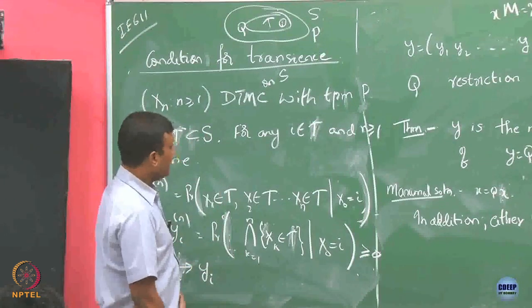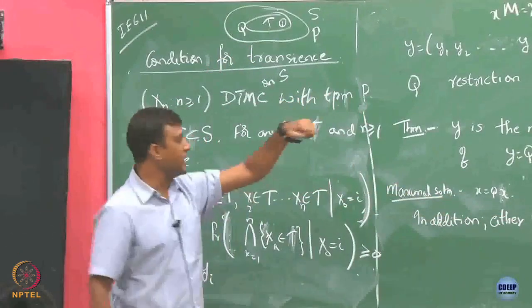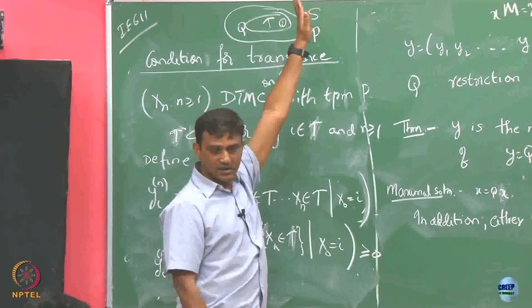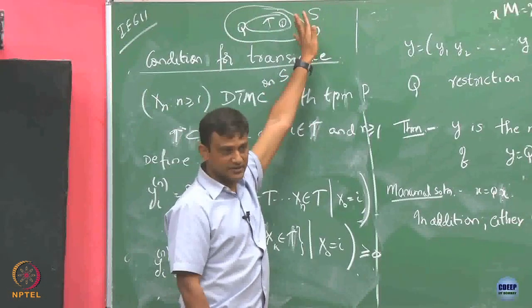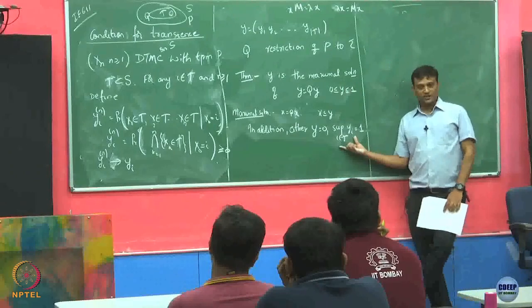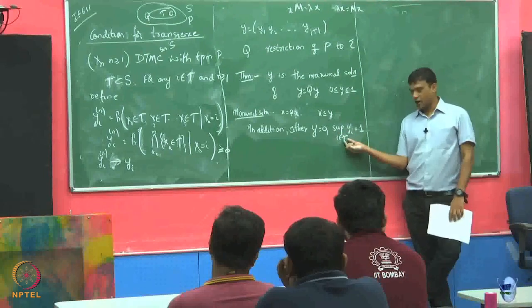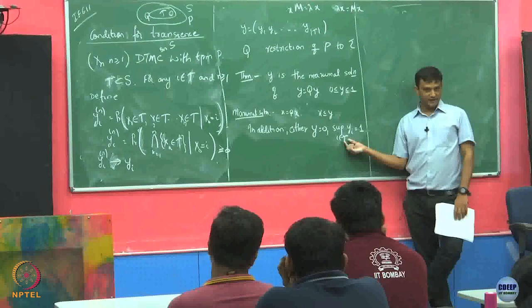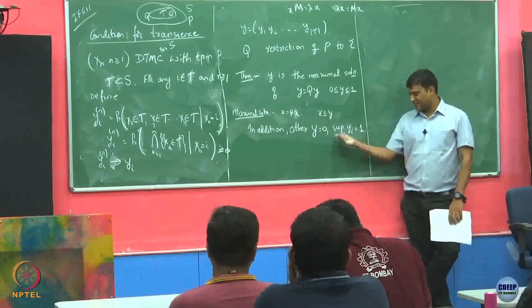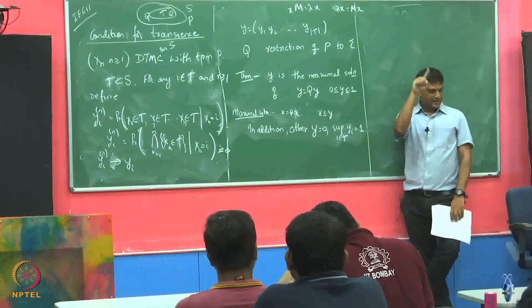What we are saying is: if Y equals 0, that means starting from a particular state in this class, eventually you will get out — you will no longer remain. Or, if the supremum of Yi over all i is 1, then there exists some i such that starting from that state in T, you will remain in T.